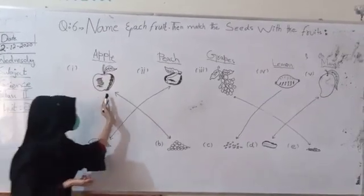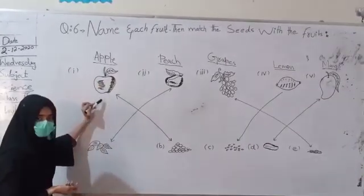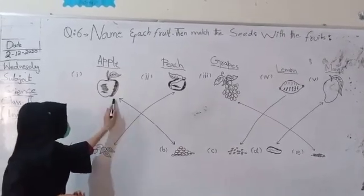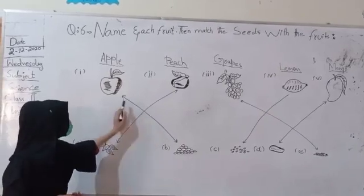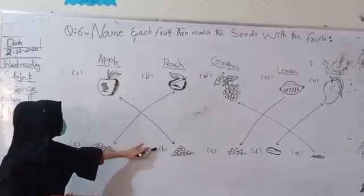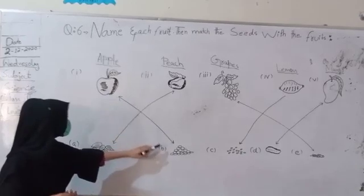This fruit is apple. Apple's seed is made. We have to match it with seed. Apple's seed is made.